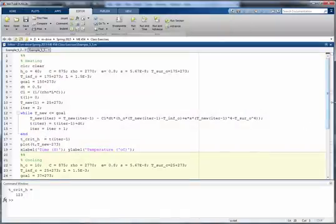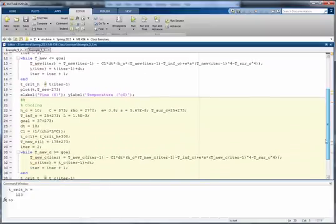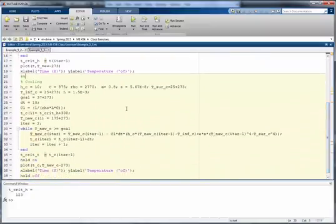If we do the cooling process, the process is basically the same, we set it up exactly in the same way. The difference is going to be how we start the time. The time for the cooling I start with the critical time that I obtained for the heating plus 300, since that's the required elapsing time for the curing process. Then we start the same thing with the first position for this new vector. Notice that I have T new c for cooling and the same thing for tc for cooling instead of t.